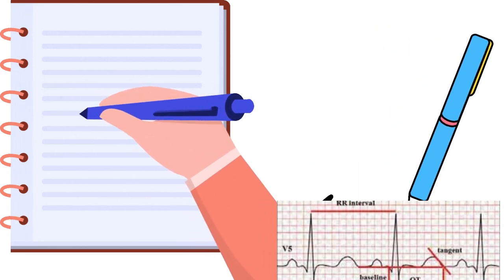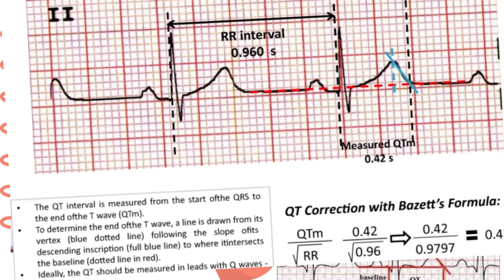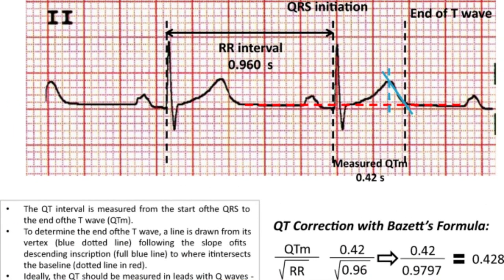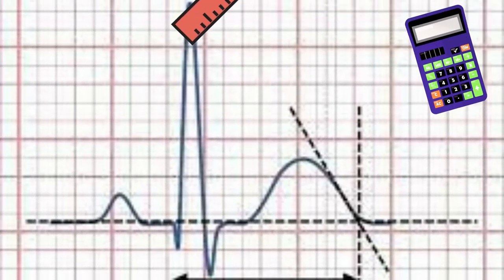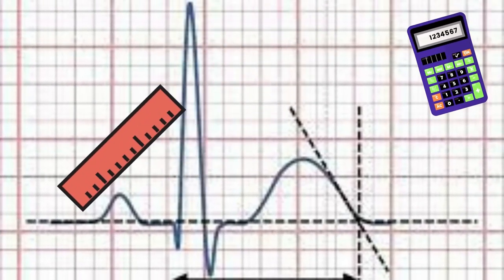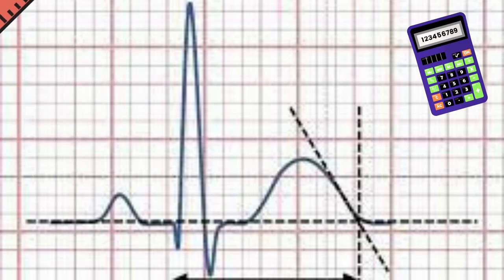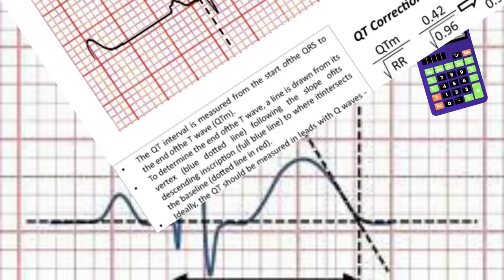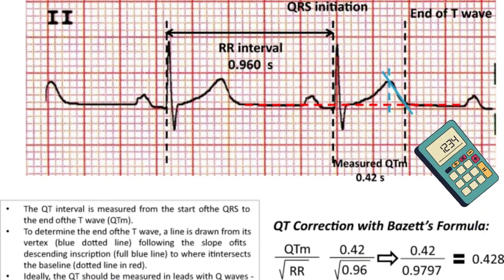3. Standardize — to ensure consistency, standardize the heart rate by calculating the corrected QT interval (QTc). This compensates for variations in heart rate and enables more accurate interpretation.